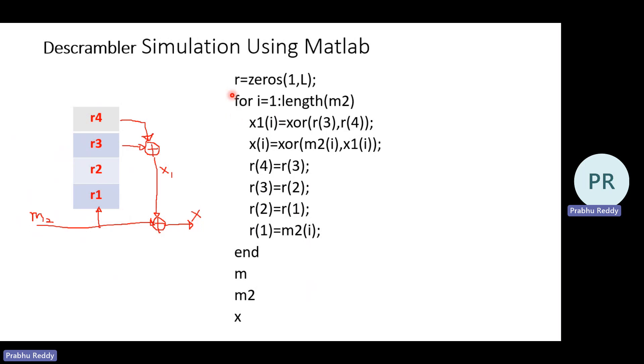So how to implement this? To implement this in MATLAB, once again, R equal to zeros of 1, L. What exactly this meaning? Once again, all the shift register values I am initializing by using zeros. And now my for loop will run for all the M2 bits. For I is equal to 1 to length of M2, X1 of I is equal to XOR between R3 and R4. X1 of I is XOR between R3 and R4.